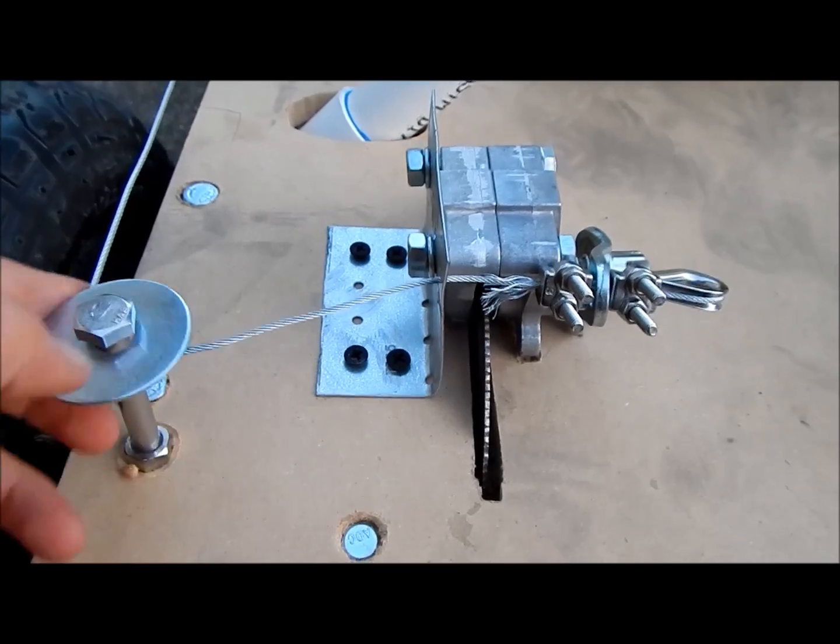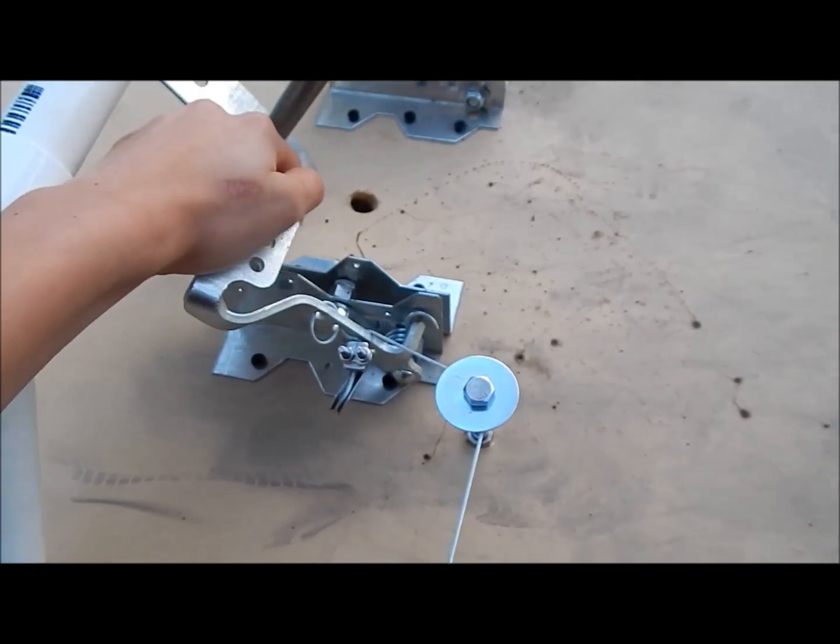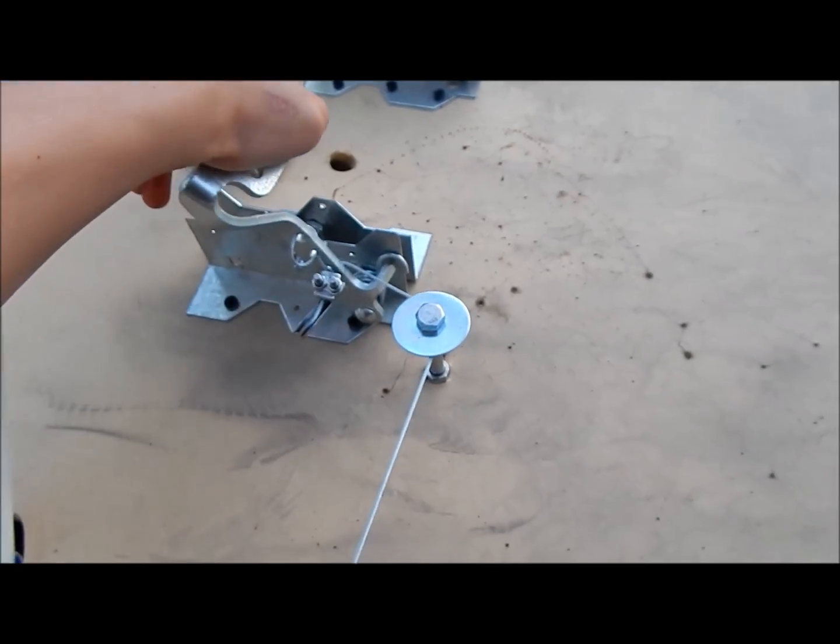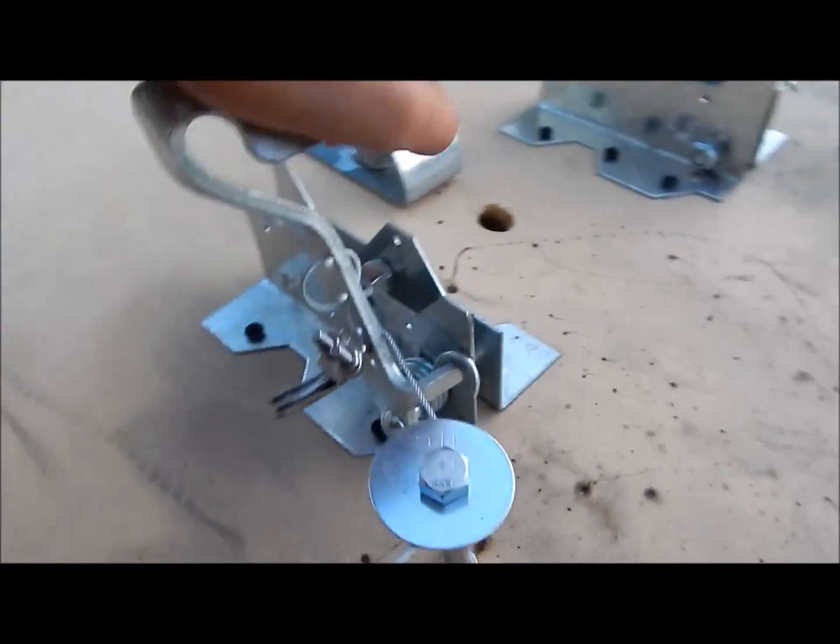I basically just ran the bike wire all the way through to the front of my cart. Every time I push the brake forward it tightens the wire and then it closes the brake clamp. That's how my brake system works.